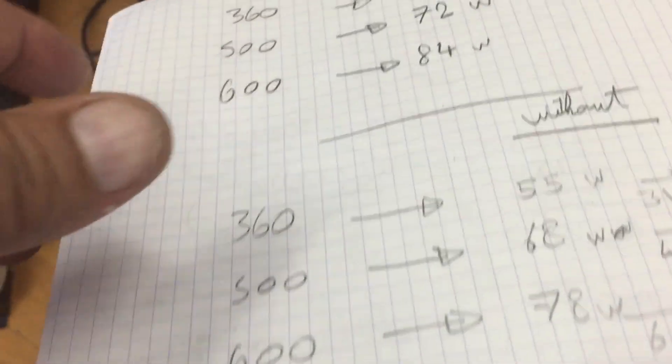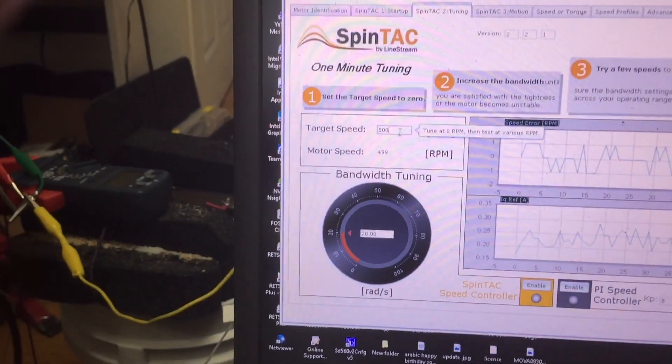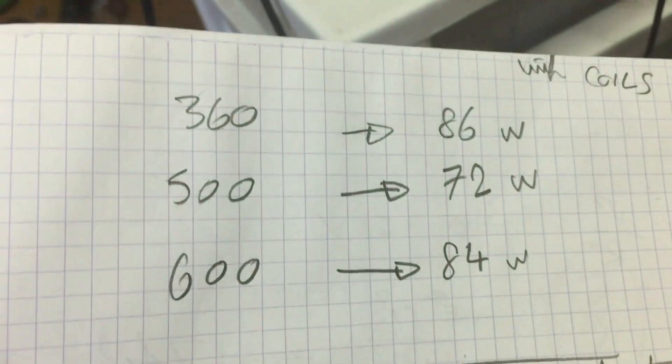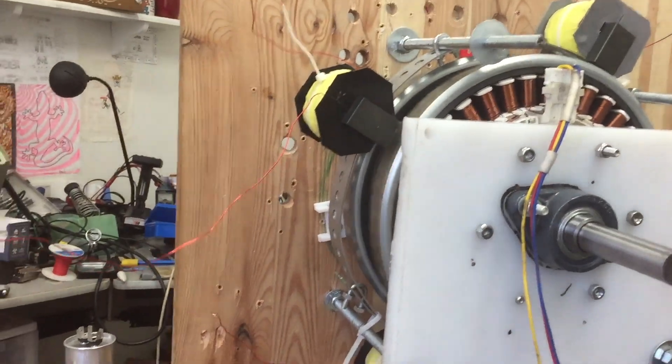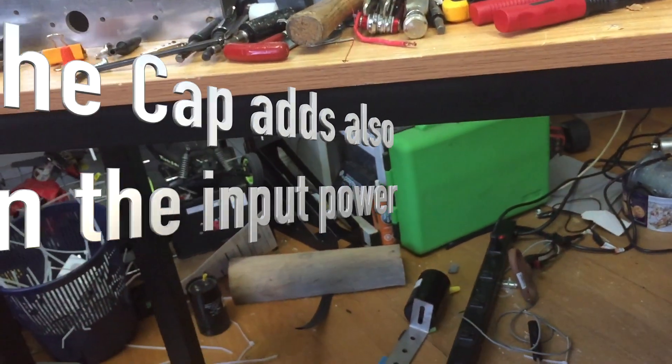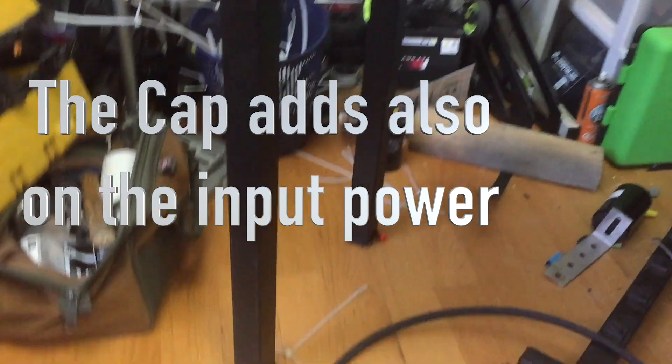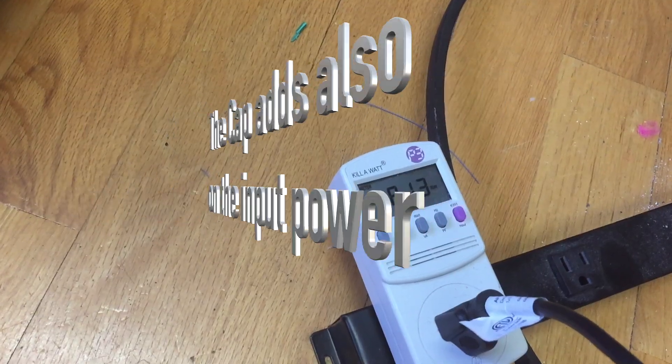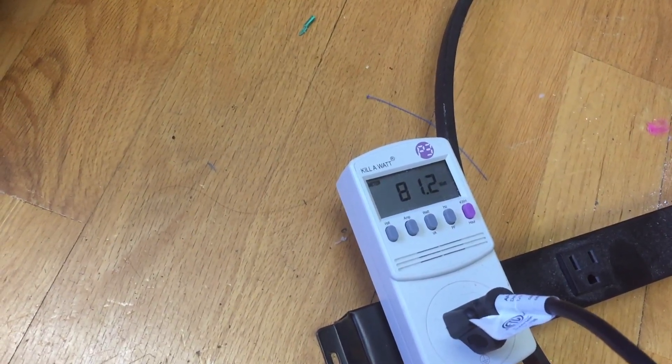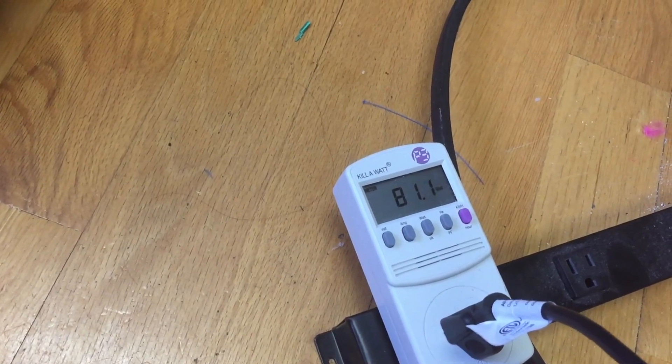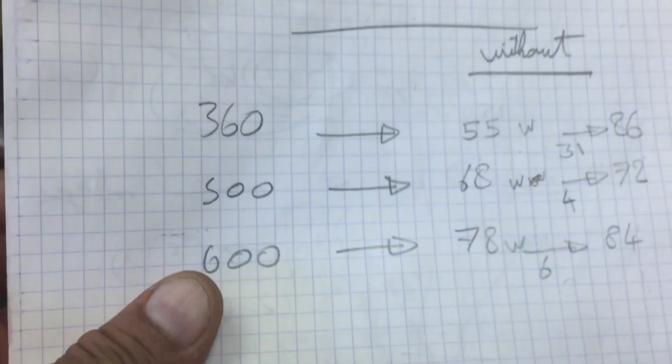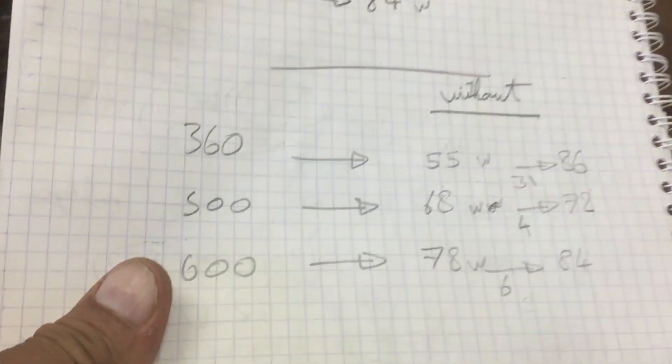Now we're gonna go to 600, it's supposed to be 84 with coils. And it's reading 81, which is an improvement, 81, which is close to 78 without.